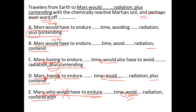Option A says 'would have to endure avoiding' — 'endure' and 'avoiding' cannot be parallel. Also it says 'comma plus contending,' and 'plus' cannot be used to join elements — it's not a conjunction. We need 'and,' so that's wrong in A.